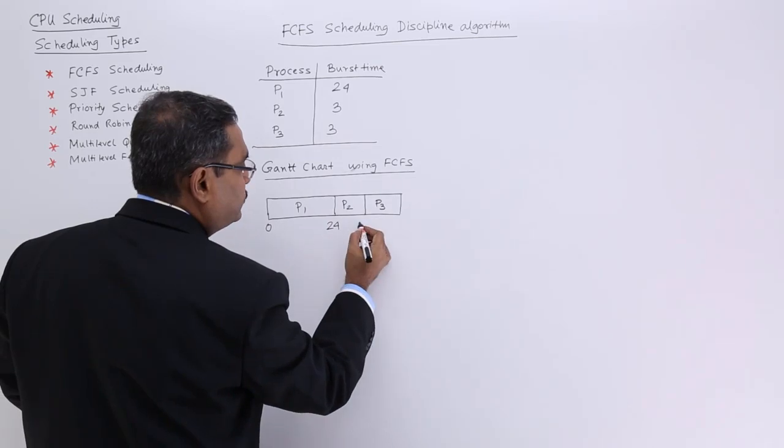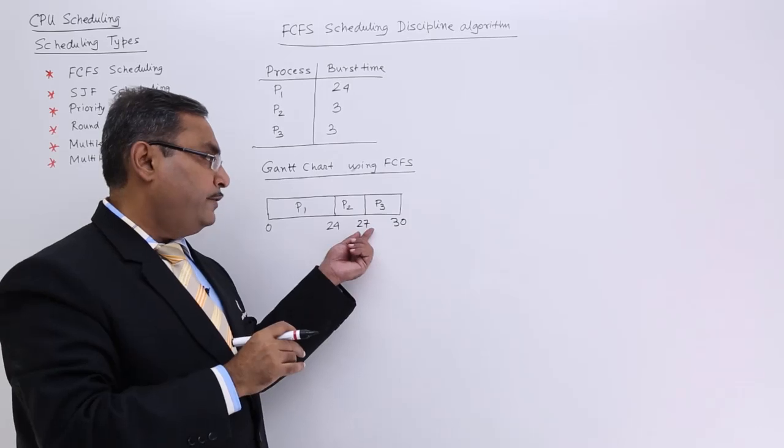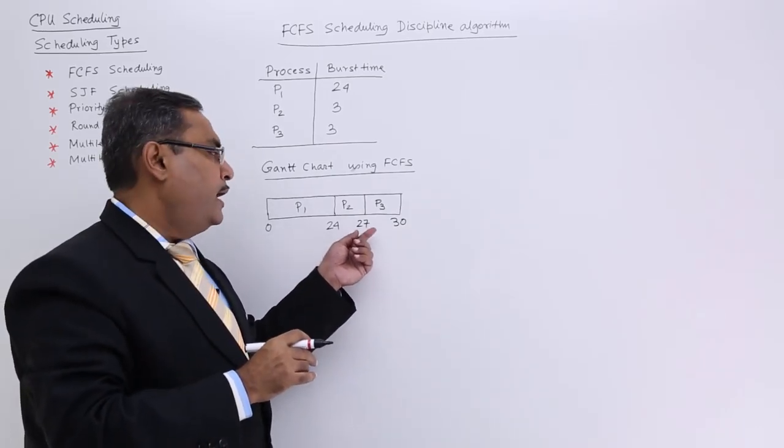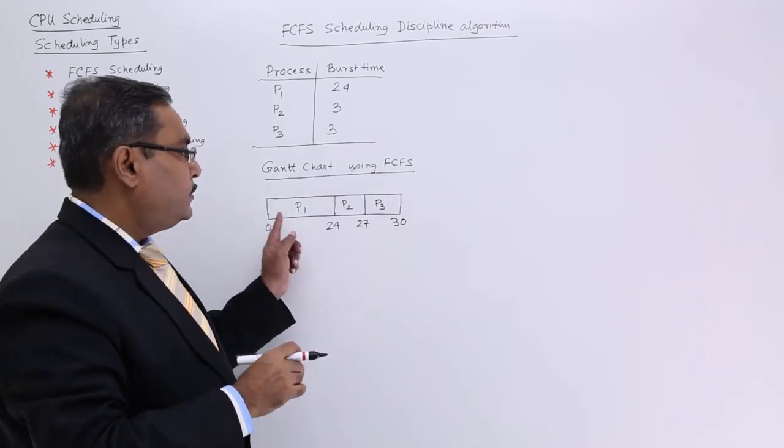Then P3 will take another 3 units of time. I write this as 27, and here 30, because 24 plus 3 equals 27, and then 27 plus 3 equals 30, which is the finishing time.